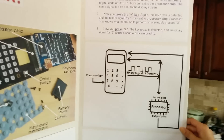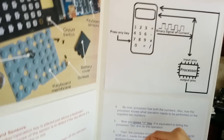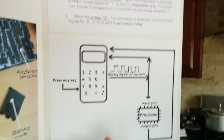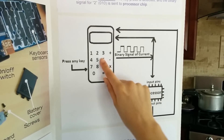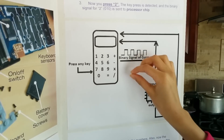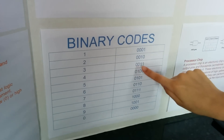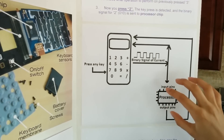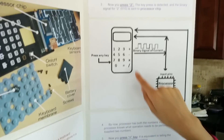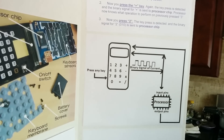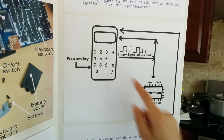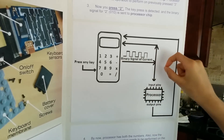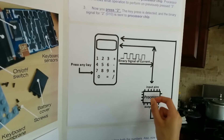Here is how it works. Let's say we want to do 3 plus 2 equals 5. When you press 3, there is a binary signal for 3, and current does no current, no current, current, current — it goes to the processor chip, and the processor chip gets which binary signal it was. Then when you press plus, there's also a binary signal for plus — it just doesn't show it on the chart — and current sends the binary signal for plus and it gets sent to the processor chip.